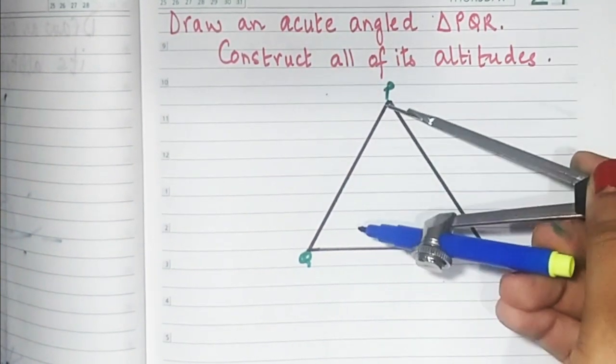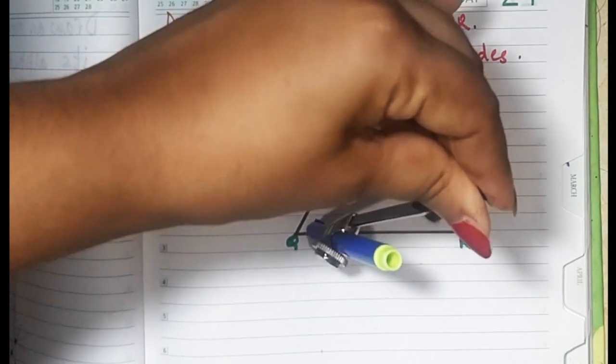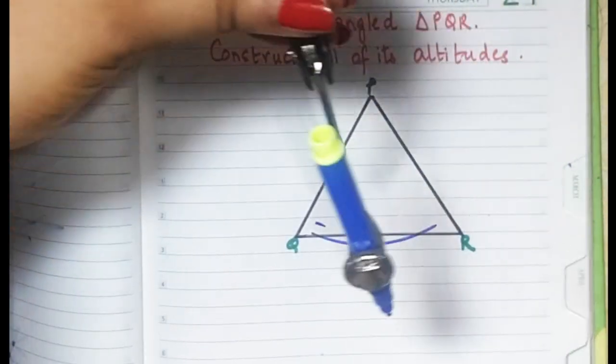In order to construct from point P, keep your pointer at P, draw a smiling face.